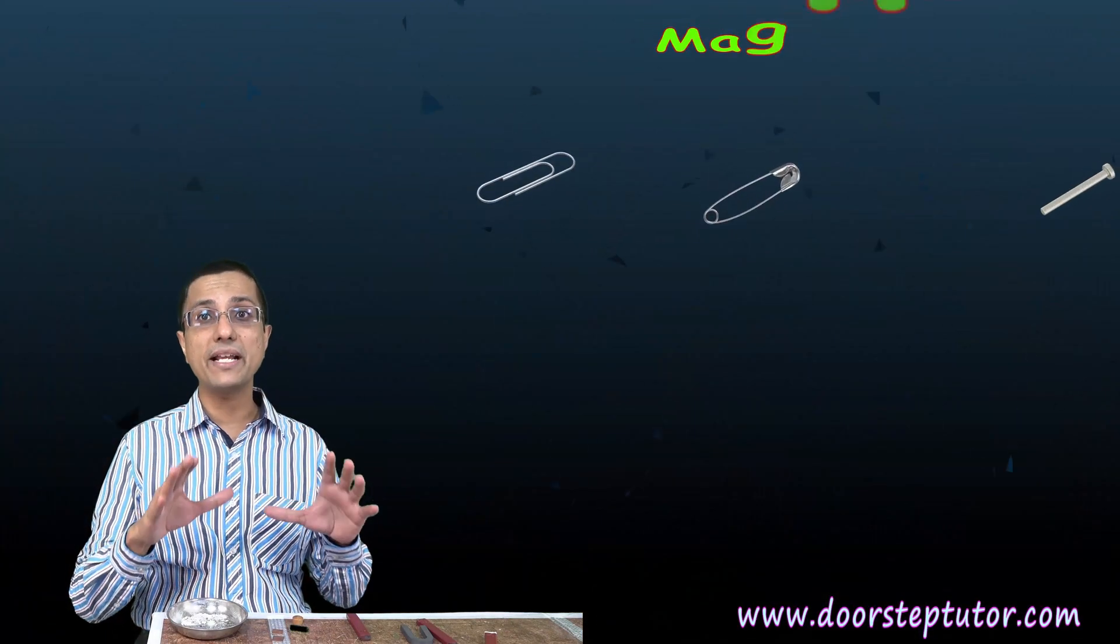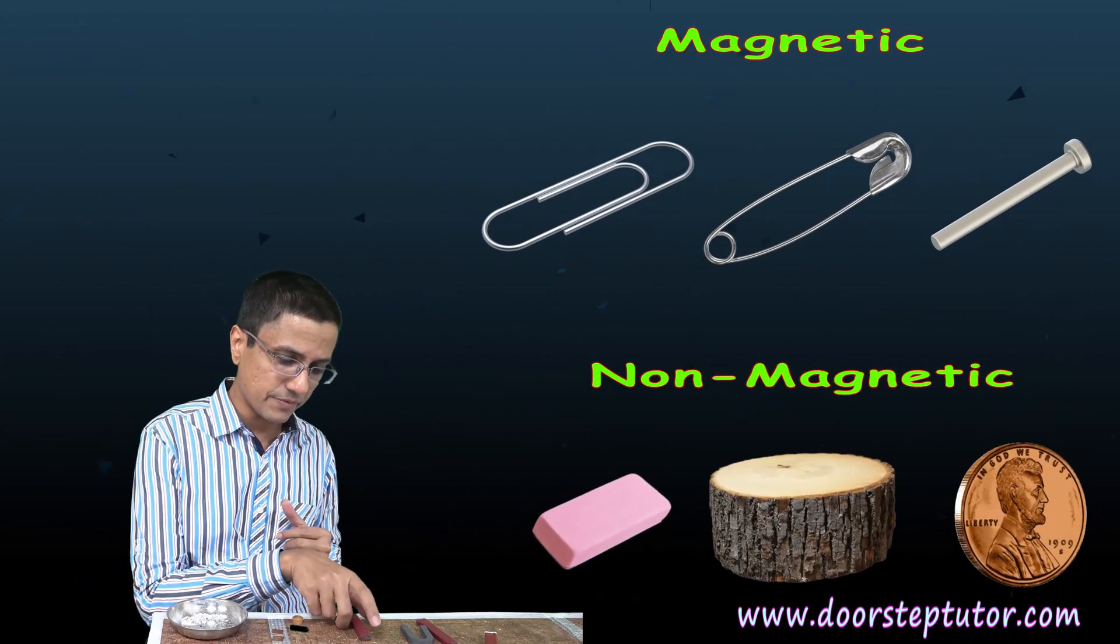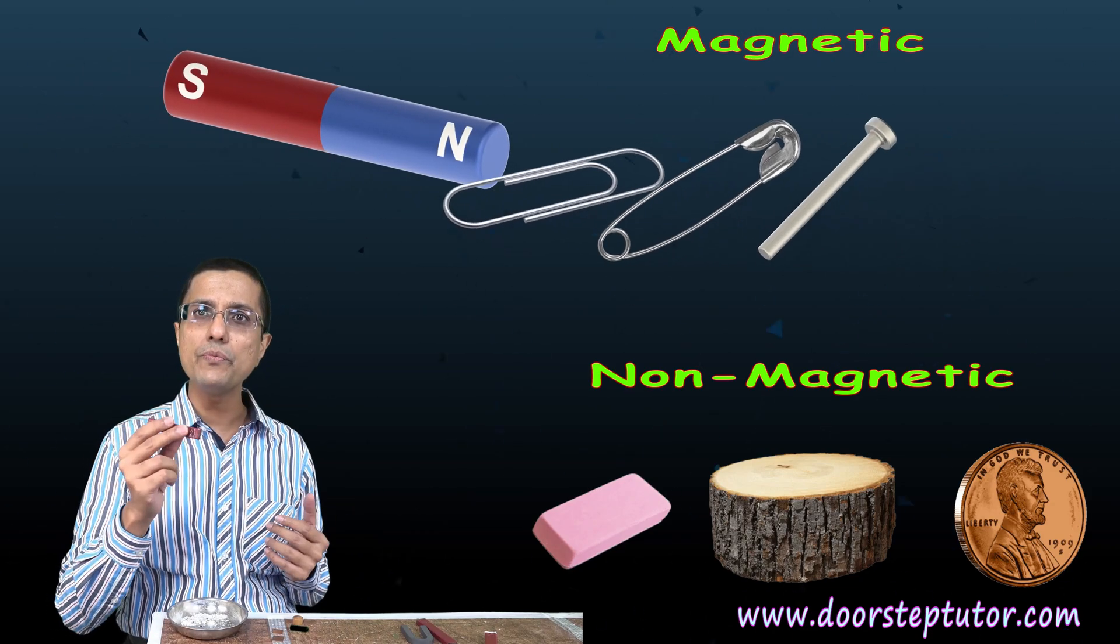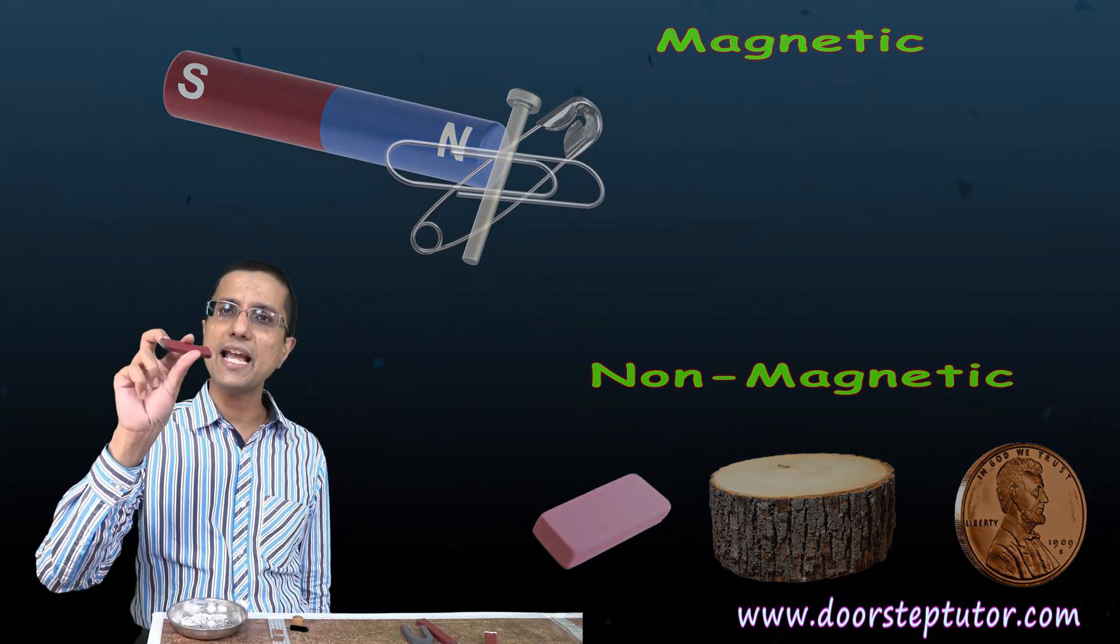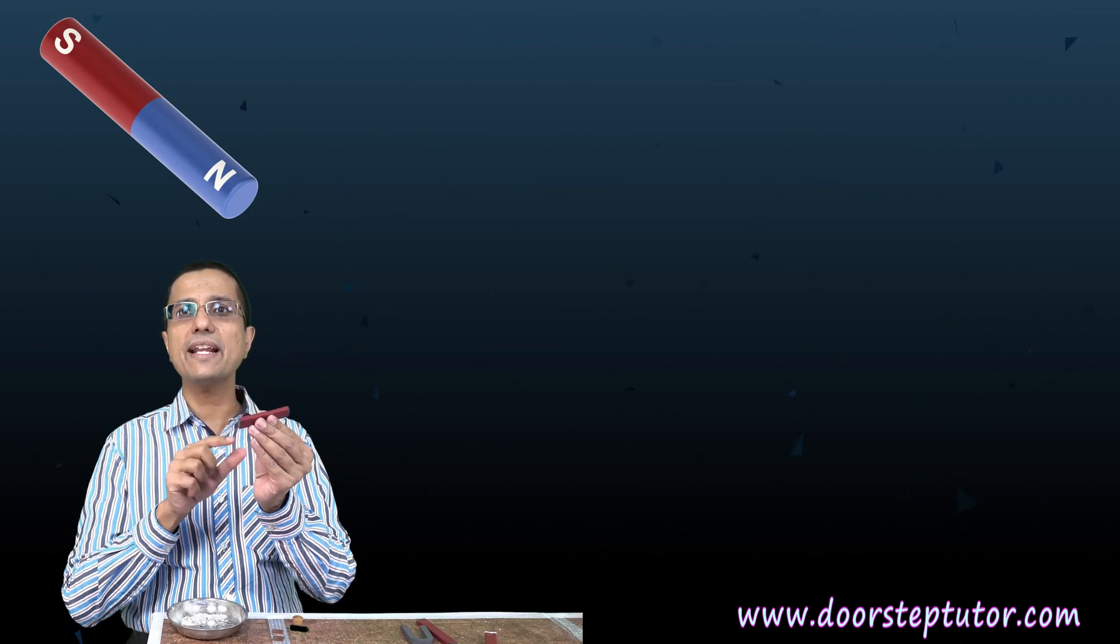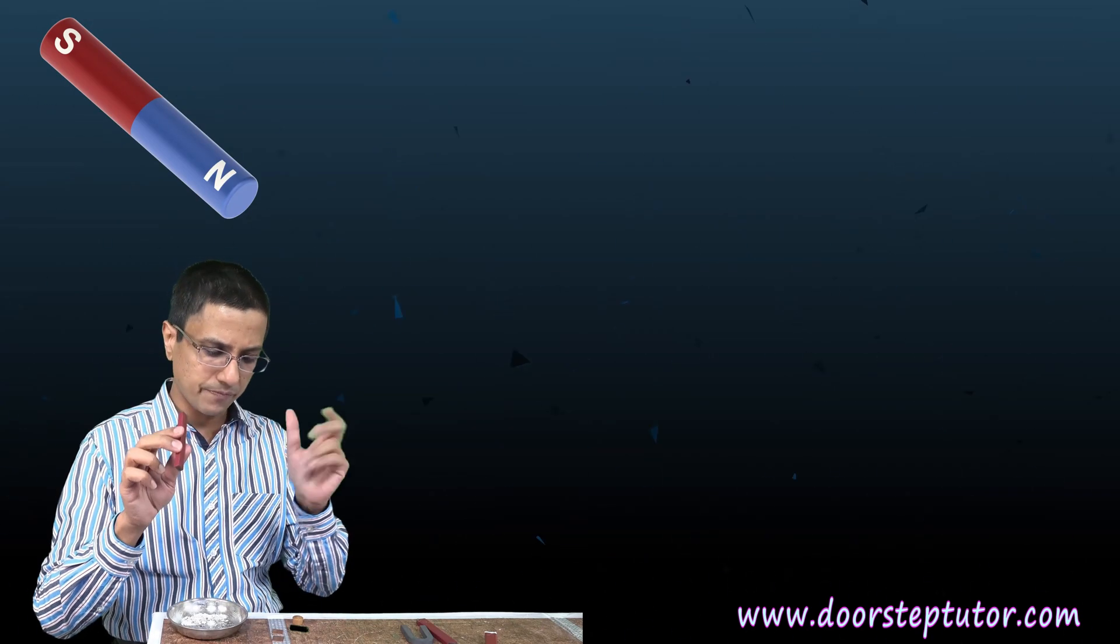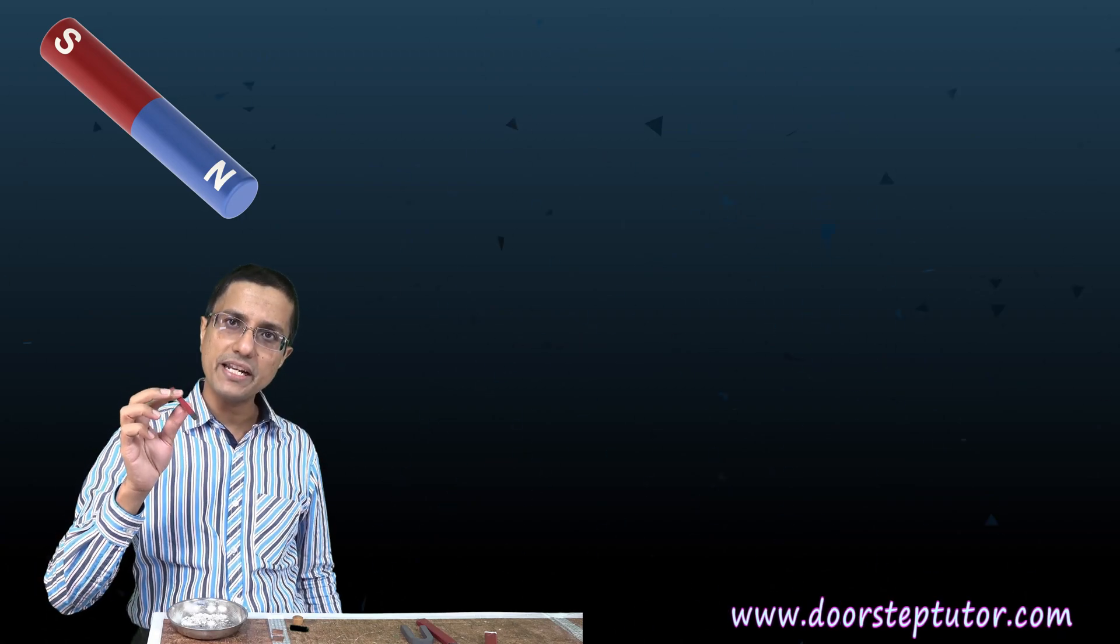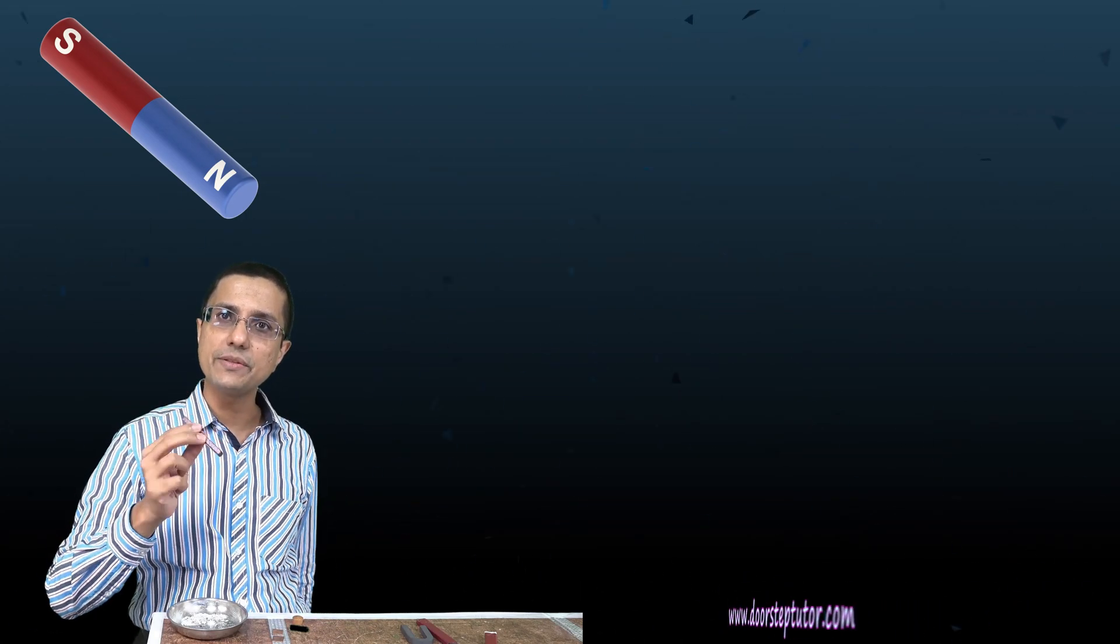This could only happen with our understanding of magnetic and non-magnetic materials. So only certain materials respond to magnetism. For example, I have a magnet with me, and this magnet has magnetism. Only certain materials would get attracted towards this magnet.